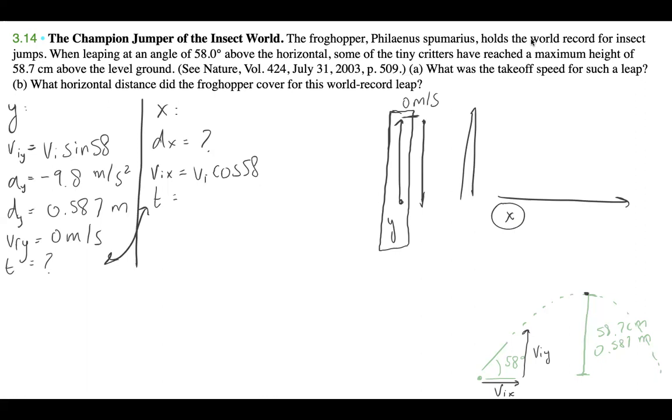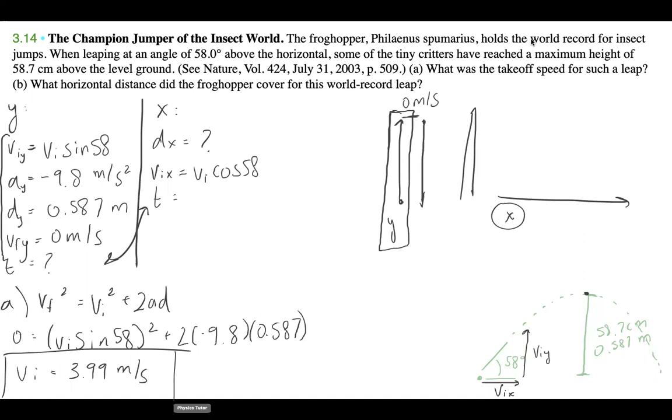Okay, so what we wanted to find out was what is the takeoff speed for such a leap. And to do that, we have to use one of our five kinematic equations. So the one that actually has all four things that we want, it's going to be VF squared is equal to VI squared plus two AD. And that's going to be zero is equal to VI sine 58 squared plus two times negative 9.8 times 0.587. And then our VI is just going to be 3.99 meters per second.